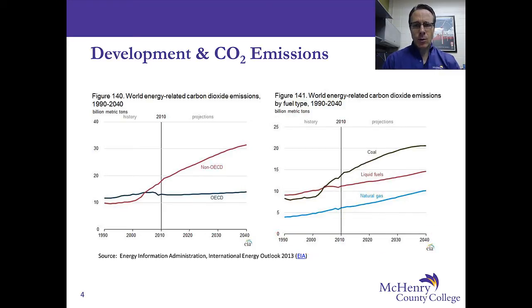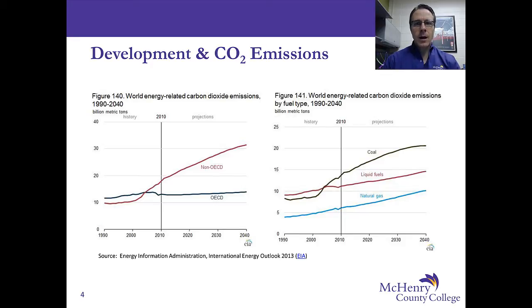We have some historical data as well as some projected data. Coal, liquid fuels, and natural gas are the three trend lines. Liquid fuels are basically petroleum products, restricted to the transportation sectors around the world. Coal and natural gas are for electricity generation. At current times, coal dominates the graph in terms of carbon dioxide emissions by fuel type, followed by liquid fuels, and then at the bottom natural gas.